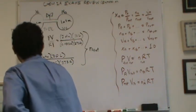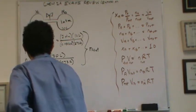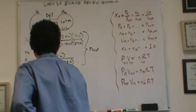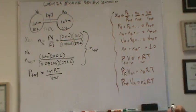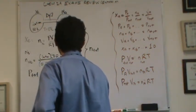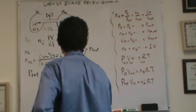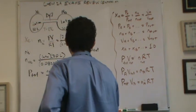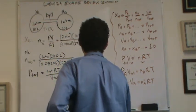So P total is going to be N total RT over V total, which is just the ideal gas law solving for pressure. So after mixing, we can determine the total pressure, because we know the total moles. R is still 0.08206, T is still 273 Kelvin.